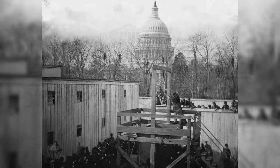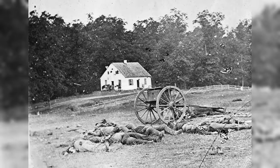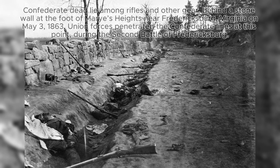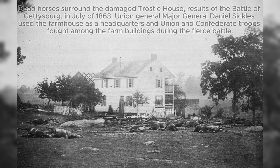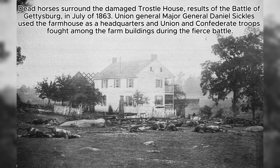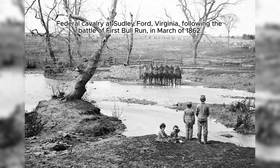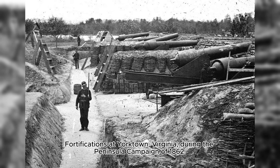Legislative attempts to balance power, such as the Missouri Compromise and the Compromise of 1850, only temporarily eased tensions. The Kansas-Nebraska Act of 1854, allowing new territories to decide on slavery, ignited fierce debates and violent clashes epitomized by Bleeding Kansas. In the cultural sphere, Harriet Beecher Stowe's Uncle Tom's Cabin exposed the brutal realities of slavery, inflaming public opinion, while figures like John Brown took more radical approaches, leading armed insurrections.